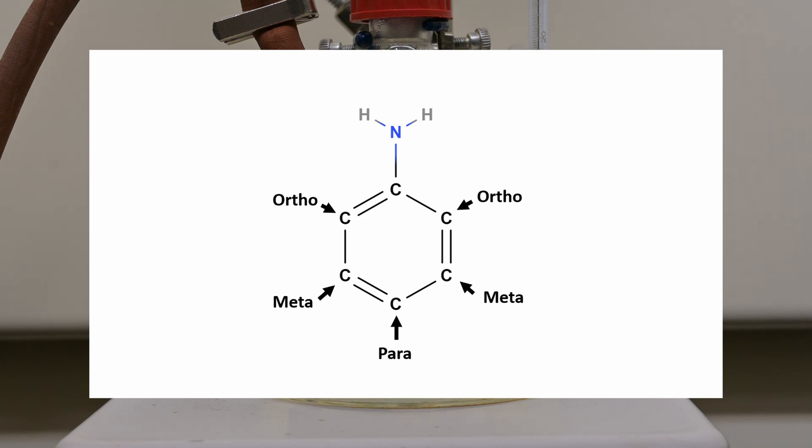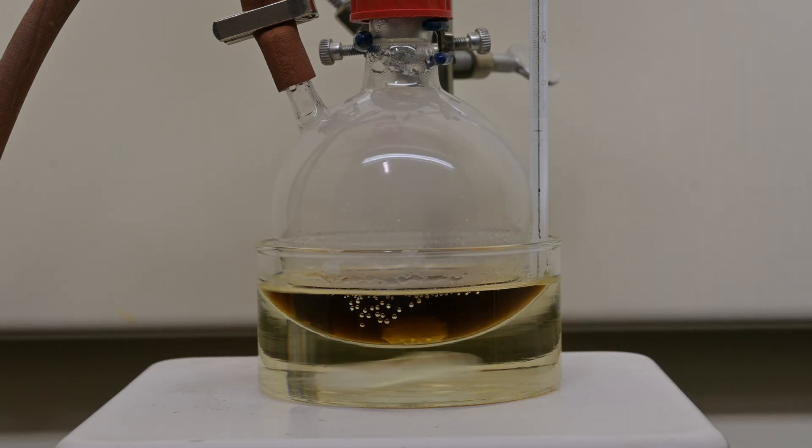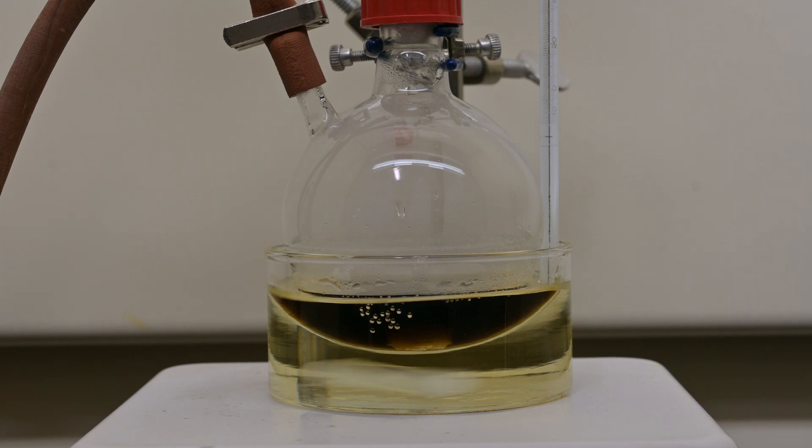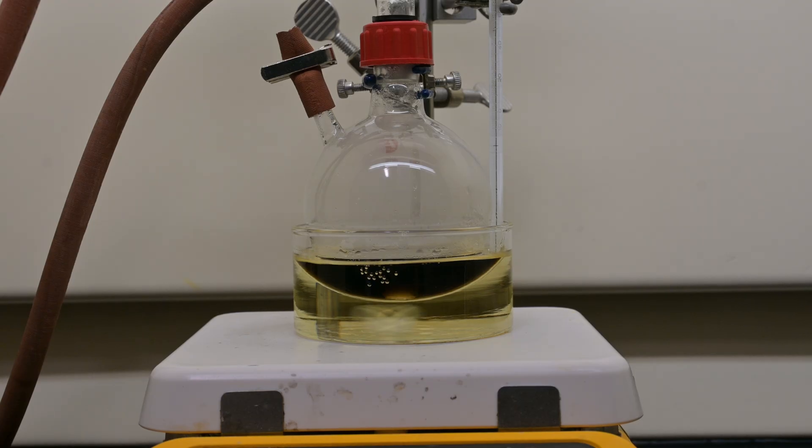In the reaction, we get para bonding due to various reasons. One is the sulfonyl group is quite large and doesn't want to bond next to the amine. Meta and ortho can occur here, but they're in small enough quantities that it's negligible for our reaction.